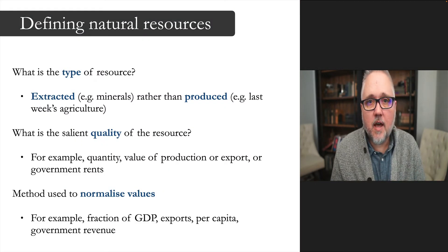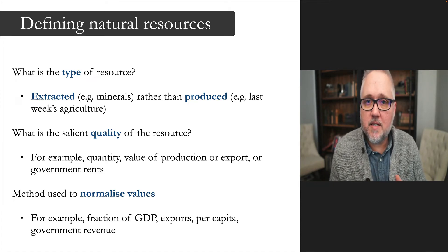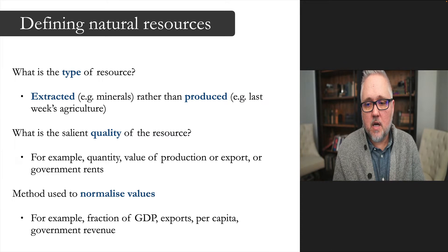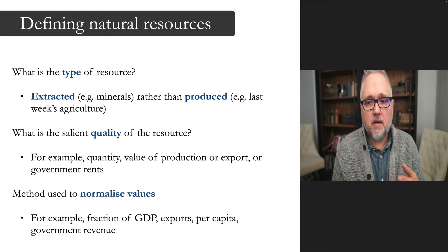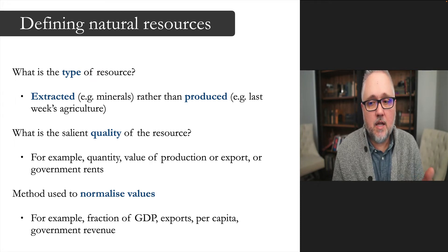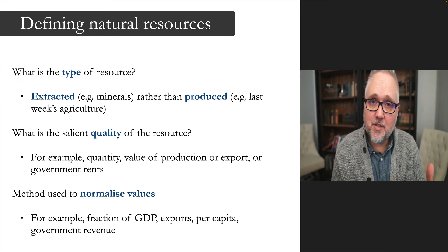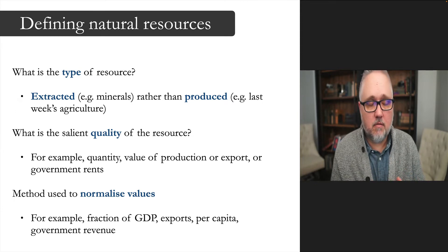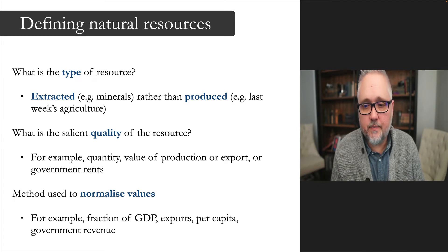Today we want to focus on natural resources and defining them in a way that's consistent with the existing literature. A key question when deciding what is a natural resource, or what type it is, concerns exactly what type of resource we're talking about. Extracted resources would be considered natural resources — like a mineral, similar to many produced here in Australia — rather than produced resources like agriculture, which requires human effort and creating something new rather than just taking something out of the ground that already existed.